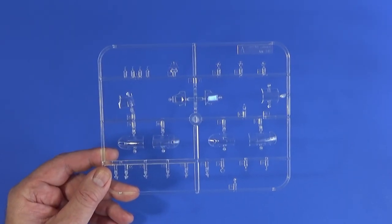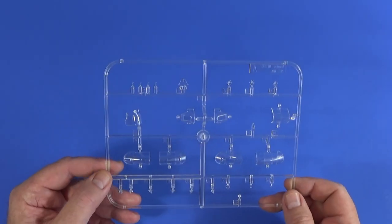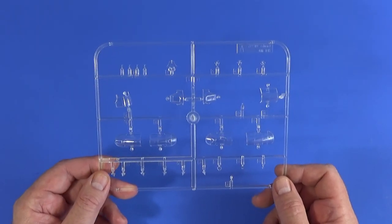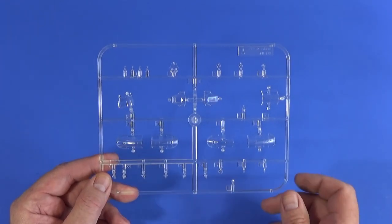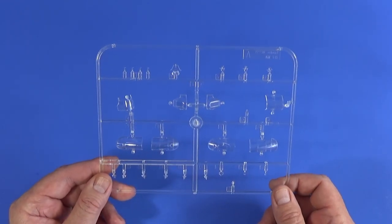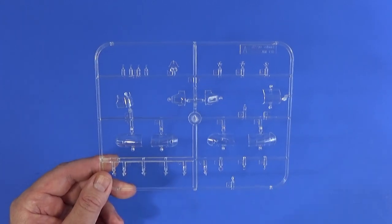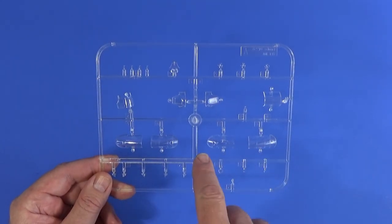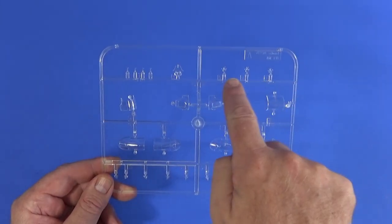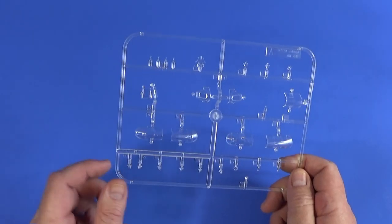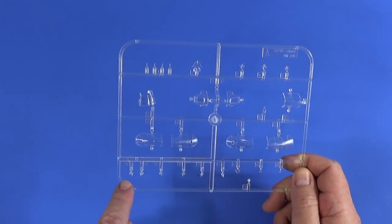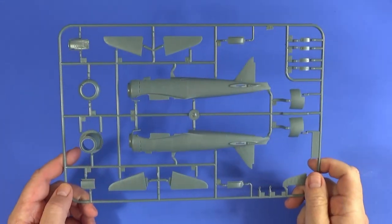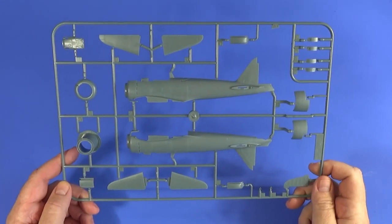Interestingly, with Eduard here, frame A is actually the transparent frame. It's normally frame K with most manufacturers. Several versions of the bits and pieces are here. You can have the canopy open or closed. You've got all sorts of different versions of different bits of the canopy. You've got three different gun sights on here. Different wingtip light arrangements and so on. There's a lot of variety just on this one frame.